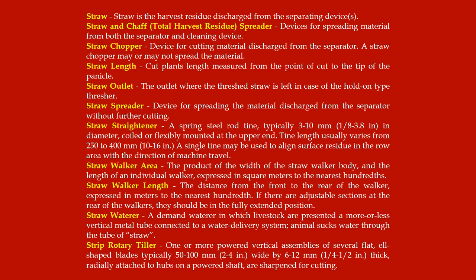Straw waterer: a demand waterer in which livestock are presented a more or less vertical metal tube connected to a water delivery system; the animal sucks water through the tube. Strip rotary tiller: one or more powered vertical assemblies of several flat L-shaped blades, typically 50 to 100 mm (2 to 4 inches) wide.